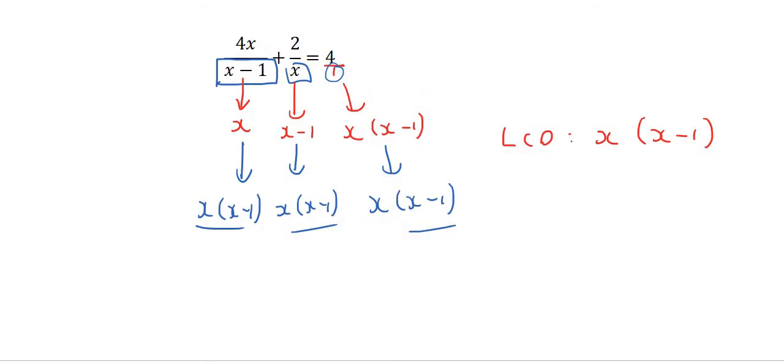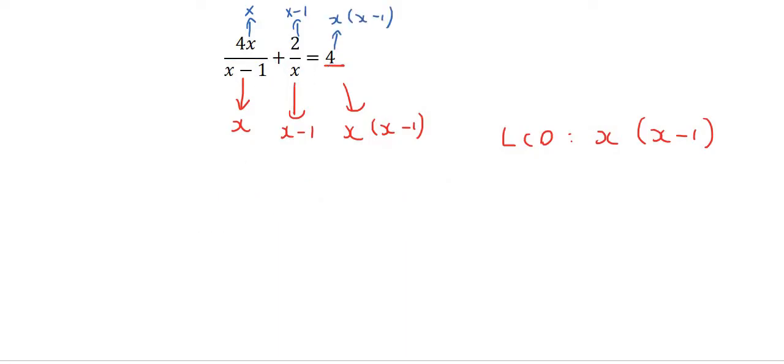So we need to do the same to the top. So we're going to multiply this one by x, this one by x minus 1, and this one by x, x minus 1. And so we don't have to multiply it out just yet. I'm just going to say 4x, and we're going to multiply that with x plus 2. That 2 is going to be multiplied by x minus 1. And then that's equal to 4, which is going to be multiplied by x and x minus 1.